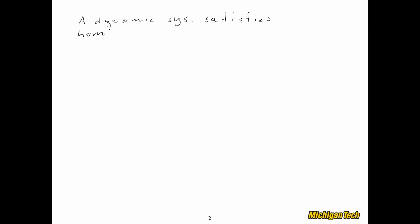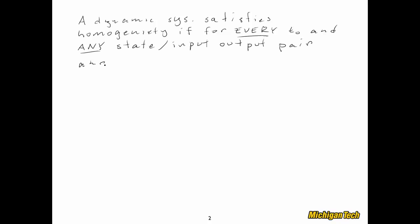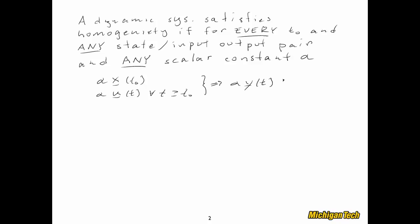A dynamic system satisfies homogeneity if, for every initial time t0, any state input-output pair, and any scalar constant alpha, if you multiply the initial state x(t0) by alpha and you multiply the input also by alpha, then the output is equal to alpha times the output y of t you would get from just the original x(t0), u(t) state input-output pair.